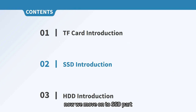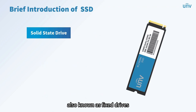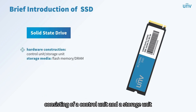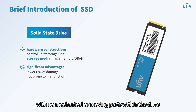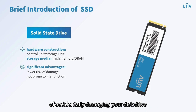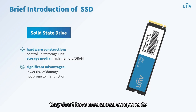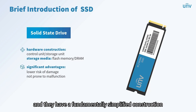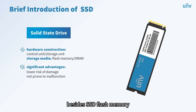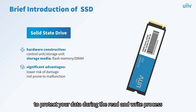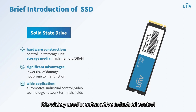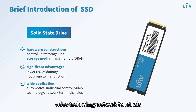Now we move on to SSD. Solid state drives, also known as fixed drives, are hard drives made with arrays of solid state electronic memory chips, consisting of a control unit and a storage unit. The storage media of SSD are divided into flash memory and DRAM. With no mechanical or moving parts, there is a much lower risk of accidental damage through impact or exposure. SSD flash memory incorporates error correcting code to protect data during read and write processes. SSDs are widely used in automotive, industrial control, video technology, network terminals, power, medical, aviation, and navigation equipment fields.